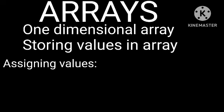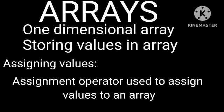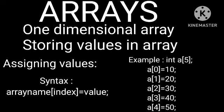The third method is assigning values. The assignment operator is used to assign values in an array. The syntax is: array_name[index] = value. For example: int a[5]; a[0]=10, a[1]=20, a[2]=30, a[3]=40, a[4]=50.